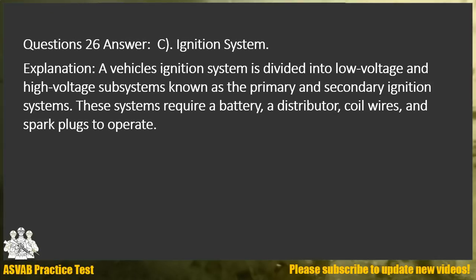Question 26. Answer C. Ignition system. Explanation: A vehicle's ignition system is divided into low-voltage and high-voltage subsystems known as the primary and secondary ignition systems. These systems require a battery, a distributor, coil wires, and spark plugs to operate.